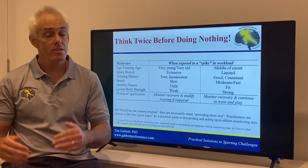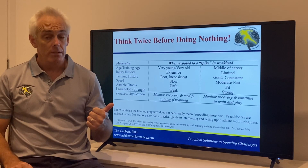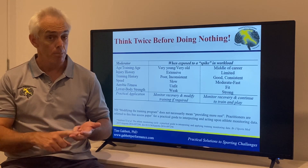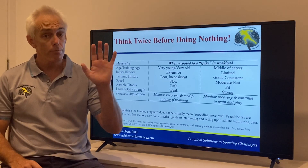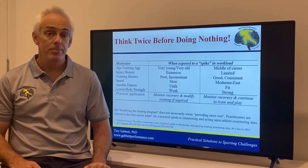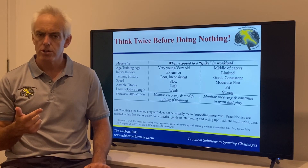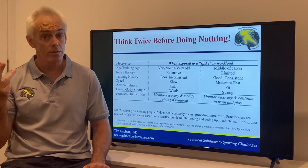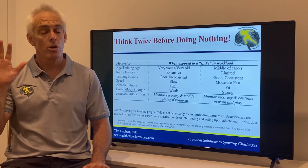Both athletes had the exact same spike in workload. Athlete A is really young, has a very long injury history, and because of that a poor training history, and because of that poorly developed strength and aerobic fitness — that's five moderators working against him. Athlete B is in the middle of his career, has a very short injury history, has been able to train consistently, and therefore has well-developed strength and aerobic capacity — five moderators working in his favor.